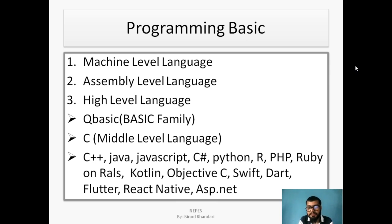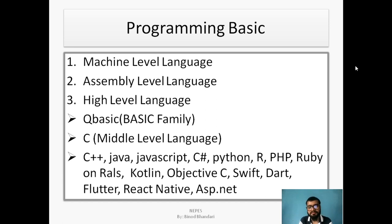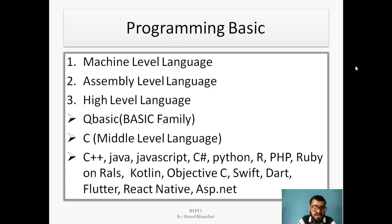R is used for data science. PHP is used for backend development. Ruby on Rails was developed by a Japanese developer and is used for backend purposes. Kotlin — by 2016, Google announced Kotlin as the official language instead of Java, and it is used for Android application development. Objective-C is the older Apple programming language; nowadays Swift is used for Apple app development. Dart is a lightweight programming language, and Flutter implements Dart and is used to produce hybrid applications — iOS as well as Android.